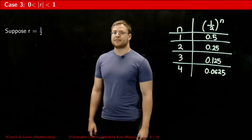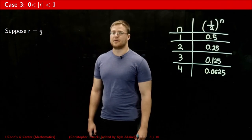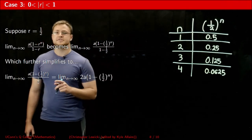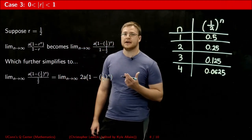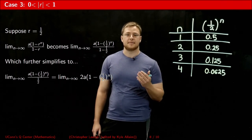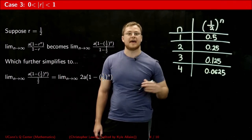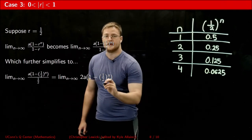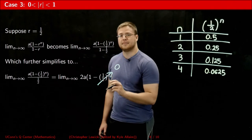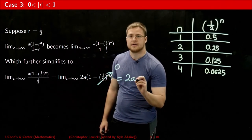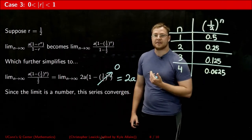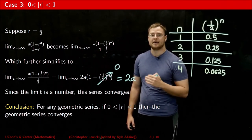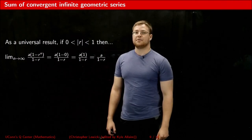Finally, let's illustrate what happens in case 3, when the absolute value of r is between 0 and 1, by setting r equal to 1/2. If I substitute this value into the limit, I get this expression, which then simplifies further. Just like any other number between 0 and 1, if I take the limit as n goes to infinity of 1/2 raised to n, as the n value increases, 1/2 raised to n gets closer and closer to 0. Because of that, this limit becomes 2a, which is a finite number. And because the limit is a finite number, I conclude that if the absolute value of r is somewhere between 0 and 1, then the series converges.